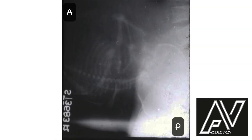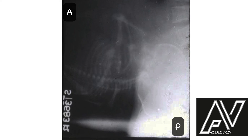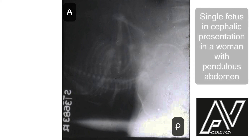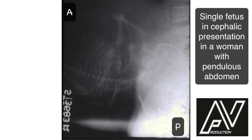This is a plain x-ray of the abdomen and pelvis, lateral view, well exposed, showing a single fetus in longitudinal lie, flexed attitude. The presentation is cephalic. The whole fetus appears to be at right angles to the vertebral column and the soft tissue shadow of the maternal anterior abdominal wall is also seen to be horizontal. Therefore, my diagnosis is a single fetus in longitudinal lie in a woman with a pendulous abdomen.